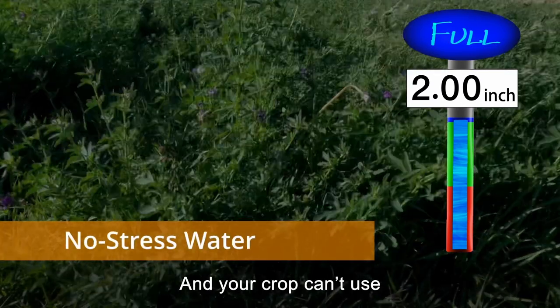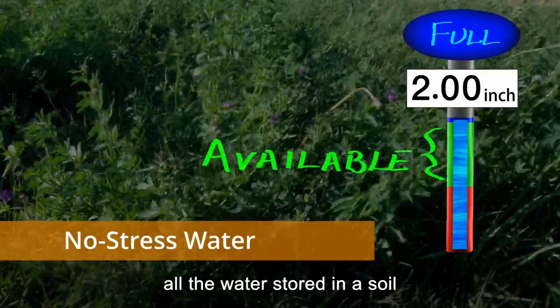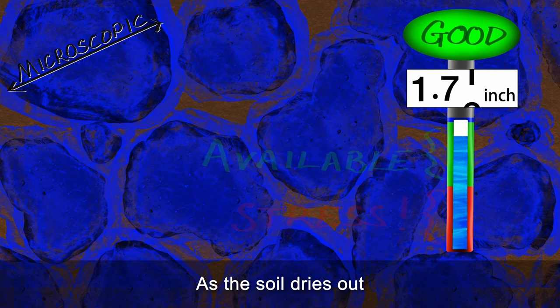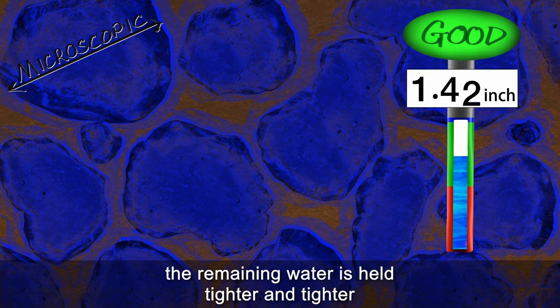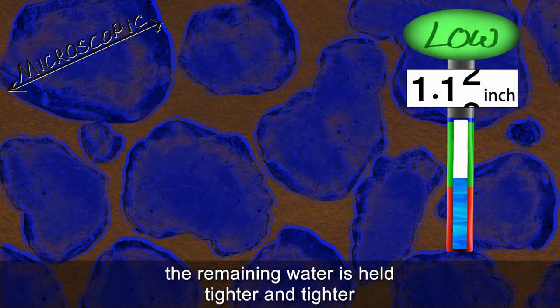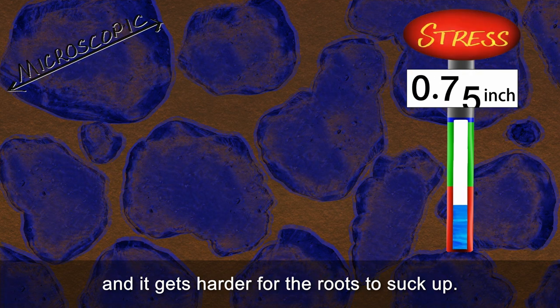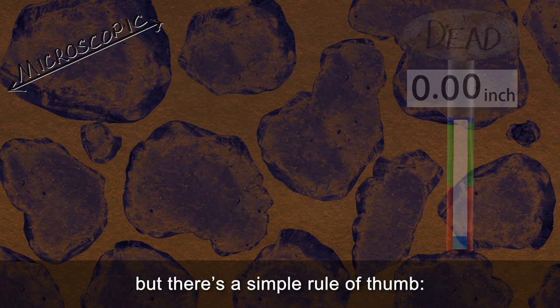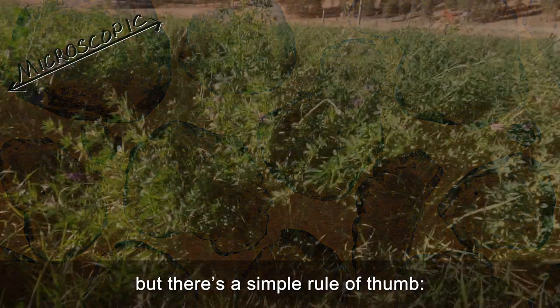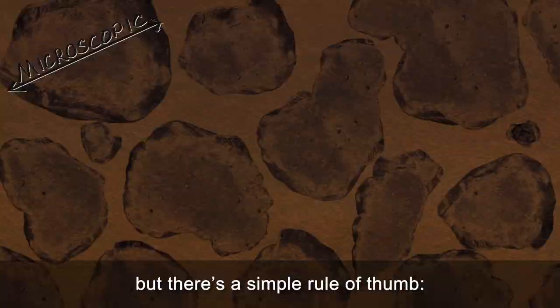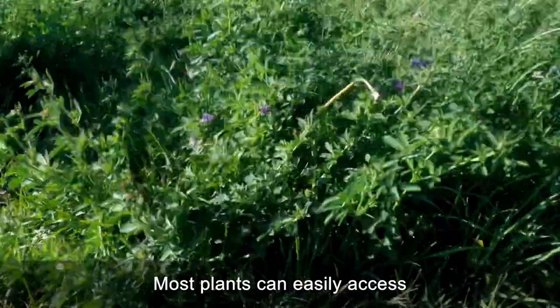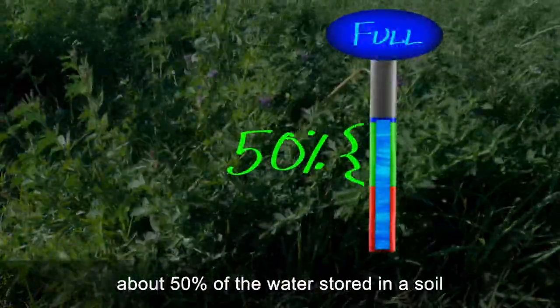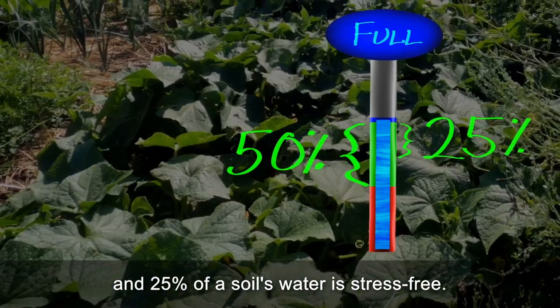And your crop can't use all the water stored in a soil, not by a long shot. As the soil dries out, the remaining water is held tighter and tighter, and it gets harder for the roots to suck up. The physics is complicated, but there's a simple rule of thumb. Most plants can easily access about 50% of the water stored in a soil, and 25% of a soil's water is stress-free.